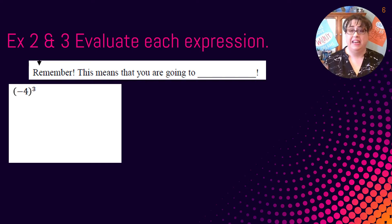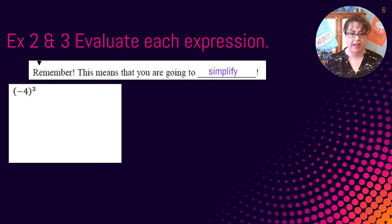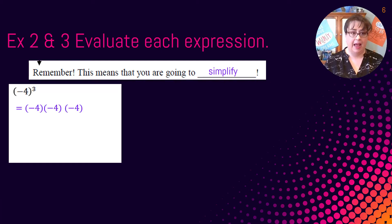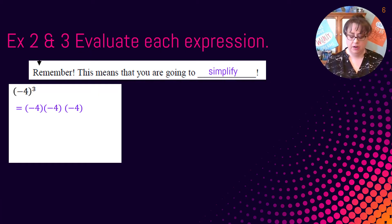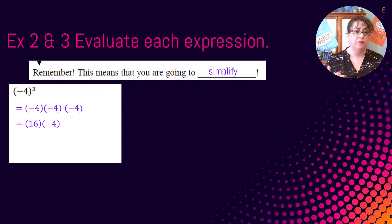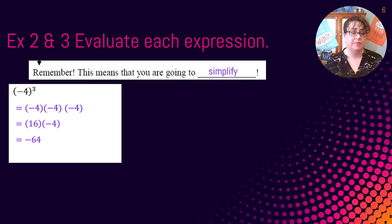Now that we understand what exponents are and how they work, we're going to evaluate each expression — that means simplify. We have (negative 4) to the 3rd power. We take negative 4 and multiply it out three times: negative 4 × negative 4 × negative 4. The first two negative 4s give 16. Then 16 × negative 4: a positive times a negative is negative, so our answer is negative 64.